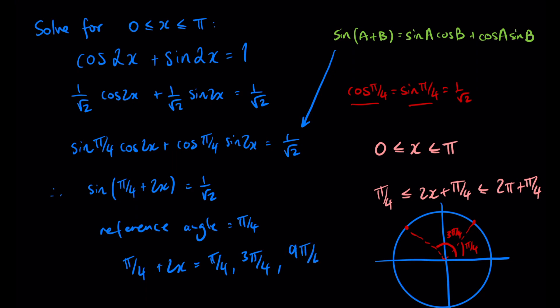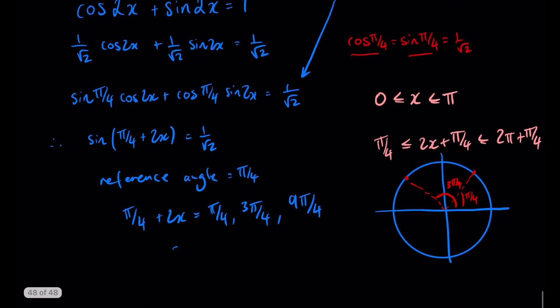Then we solve for x, so 2x is going to be 0, π on 2, and 2π.